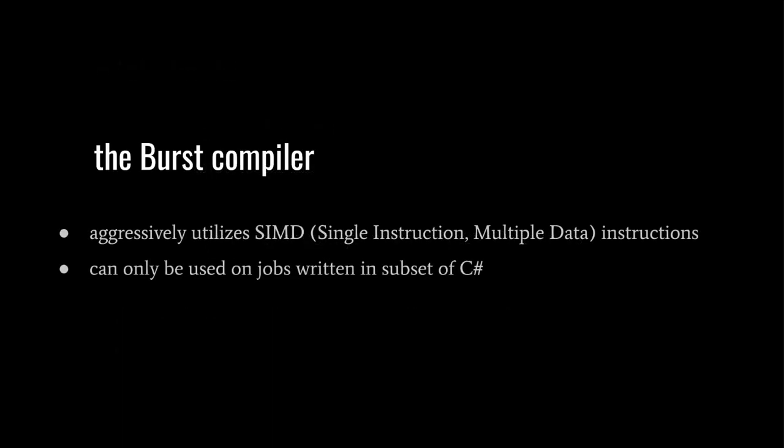The Burst compiler is an optimizing C# compiler that can aggressively utilize SIMD instructions — single instruction, multiple data instructions. The Burst compiler, though, only works on a subset of C# that Unity calls high-performance C#, and it only works on job code. Especially for computation-heavy code, Burst can often yield 2x to 10x performance gains, sometimes even more.